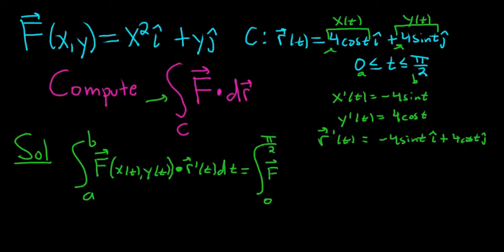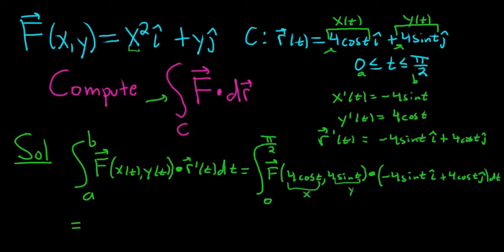And then f, now we can plug in our x. x was 4 cosine t, and then y was 4 sine t. And then dot our derivative. So our derivative here was negative 4 sine t i hat plus 4 cosine t j hat dt. The next step is to plug in 4 cosine t and 4 sine t into our vector field.